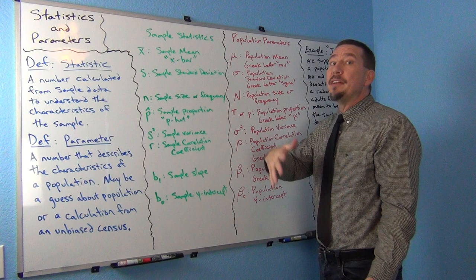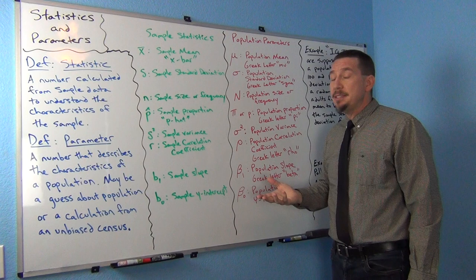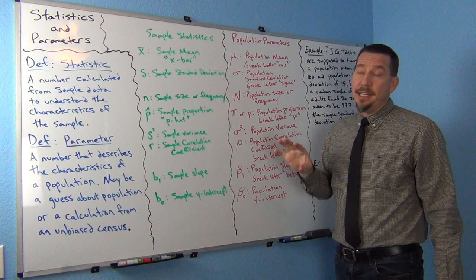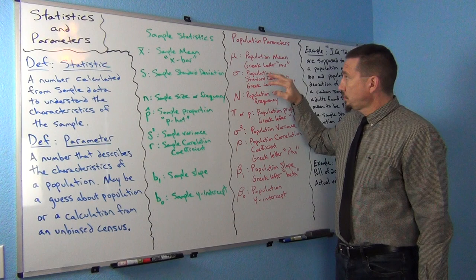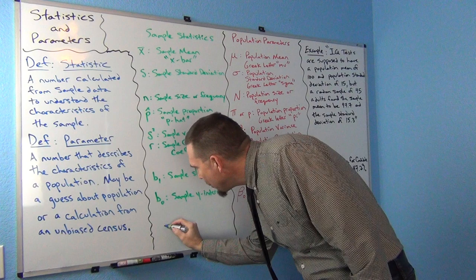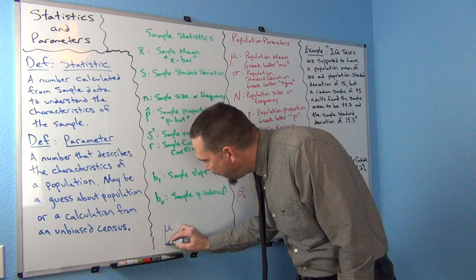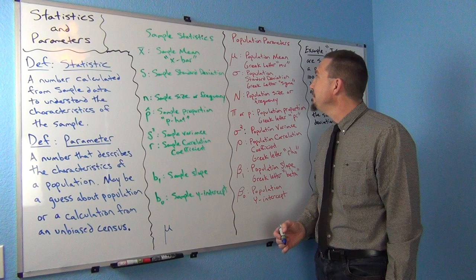But we're after the population mean — what the mean is for millions of people in the population. That would be the Greek letter mu. It's very common in statistics to use Greek letters for population values. To draw mu, just draw a lowercase u on your paper and drop a tail on the left side, almost like you were drawing a p.